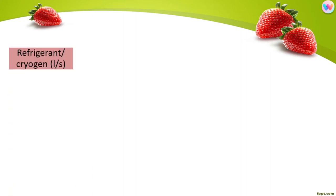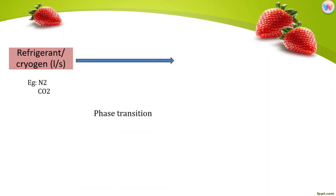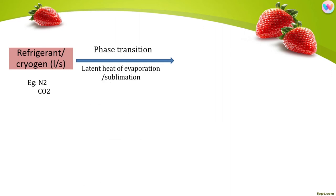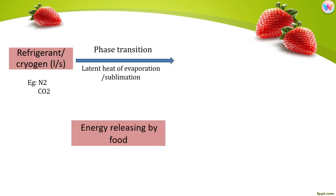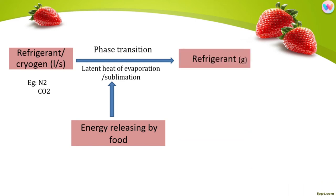The refrigerant or cryogen is in liquid or solid form — for example, nitrogen or carbon dioxide. A phase transition occurs involving the latent heat of vaporization or sublimation. The energy is released by the food, and the refrigerant converts to gas form.